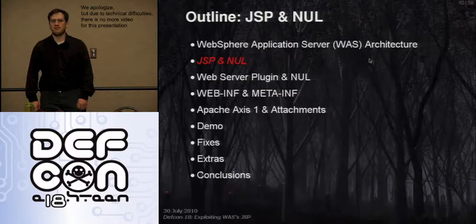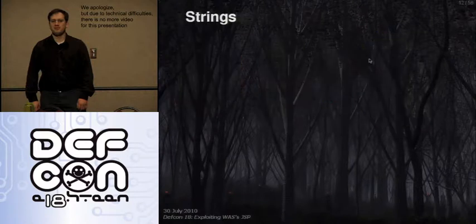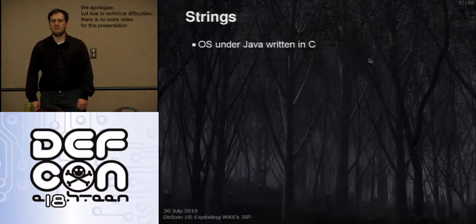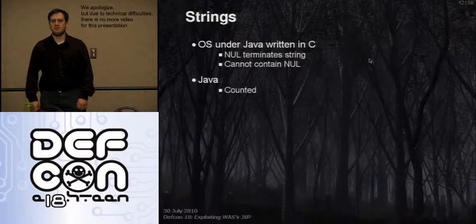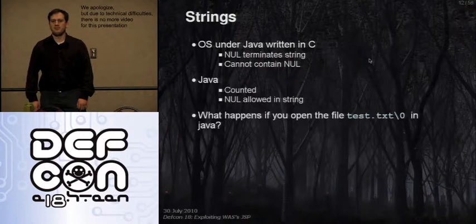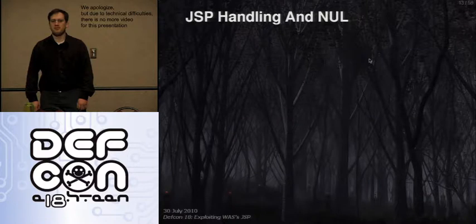Now let's move from the plug-in onto the WAS instance itself and talk about strings. Most people know about strings. Under Java, the operating system sitting underneath is written in C, which has null-terminated strings — meaning you cannot put null characters into a string and have them used later, because it terminates the string. Whereas Java uses counted strings that can have nulls in them. So what happens if you try to open a file in Java like test.txt followed by a null character? You actually get test.txt. This has been known for a very long time and has been used in Tomcat for quite a while.